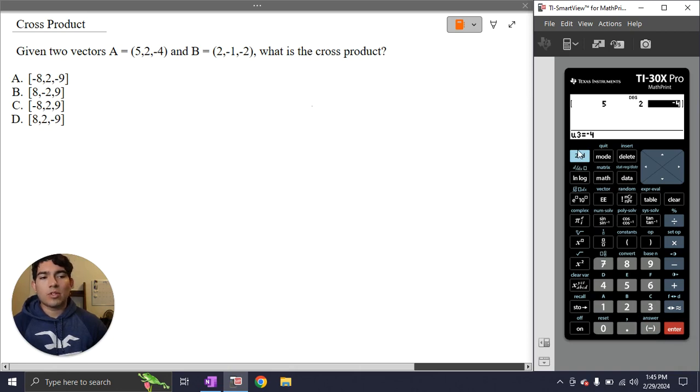And then once you have that vector in the calculator, you hit second again. In vector operations again, you go to edit your second vector. So for this one, we also have a vector in three dimensions and this one is 2, negative 1, negative 2. I'm going to go ahead and put that in my calculator.